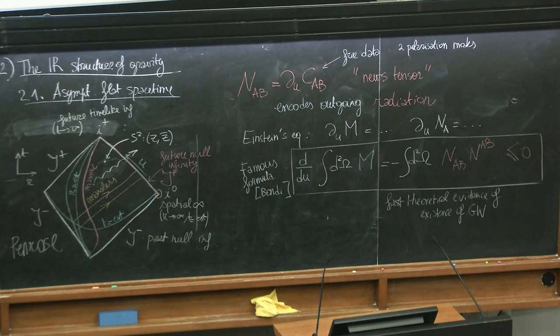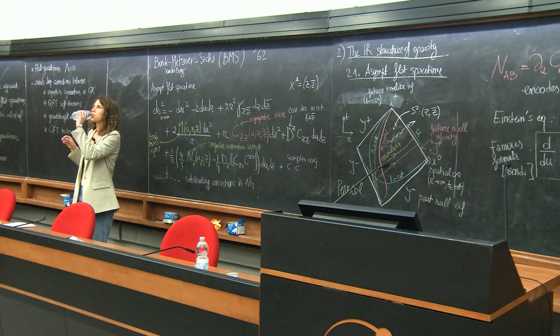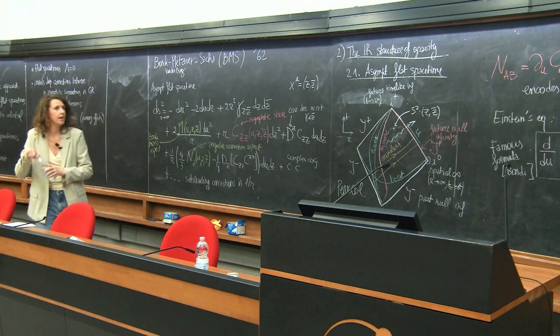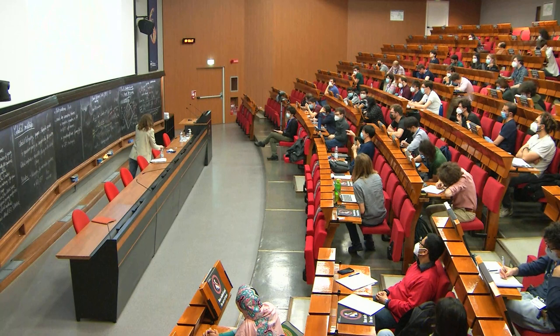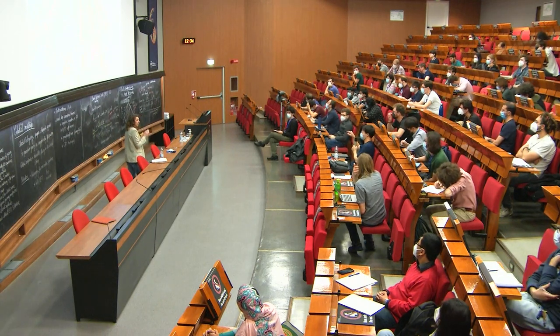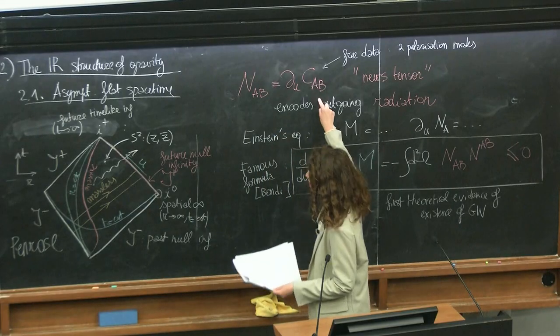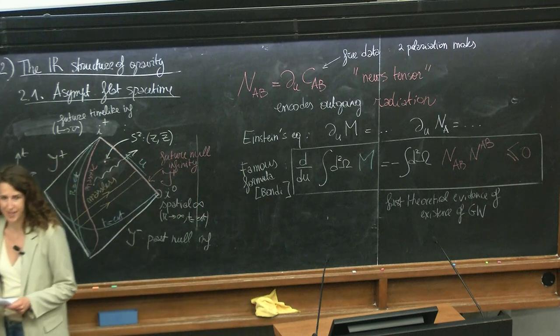Is there any question on this diagram or the definition of asymptotic flatness? — The non-zero components of C_{AB}: the tensor is symmetric and traceless, so the components are C_{ZZ} and C_{Z̄Z̄} — there is no C_{ZZ̄} component. These encode the two polarization degrees of freedom.